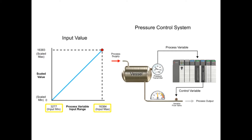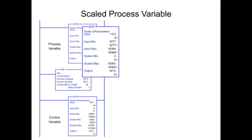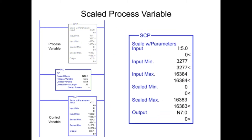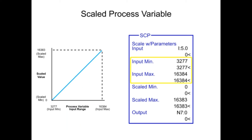The input value is scaled to a range of 0 to 16,383 compatible with the PID instruction using the Scale with Parameters instruction, or SCP. The input parameter of the SCP instruction contains the memory address of the analog input module. The input minimum and input maximum are programmed as the smallest and largest values produced by the analog input module. The input values are then scaled between the ranges programmed in the scaled minimum and scaled maximum parameters.